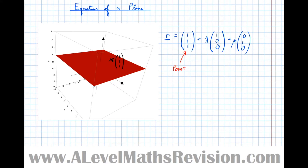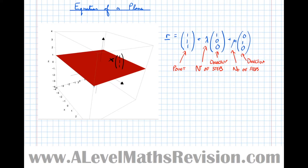What this means next is that we can move in any one of two directions a certain number of steps. We can move a certain number of steps in this direction, or in this direction. Marking those on the diagram: direction (1, 0, 0) is a step in the x-direction, and (0, 1, 0) is a step in the y-direction.